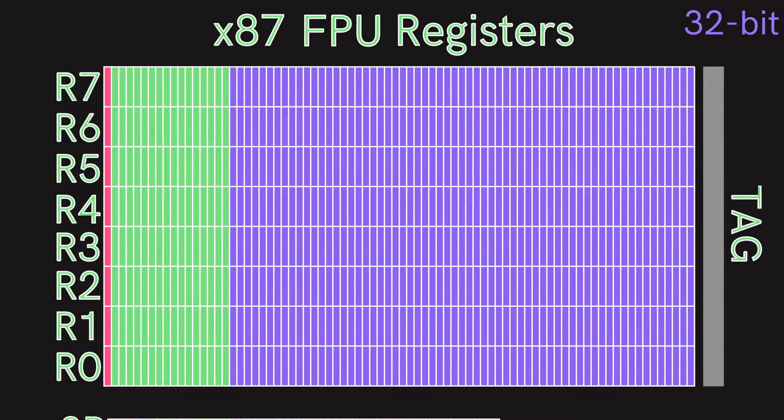The first bit is the sign — 0 for positive, 1 for negative. The next 16 bits hold the exponent, and the rest is the significand. What these bits actually mean is beyond the scope of this video.